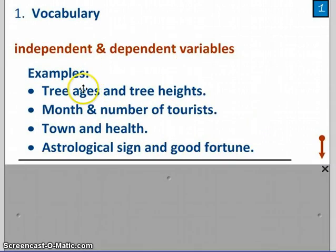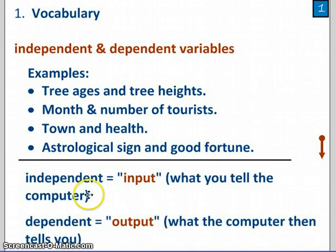Independent versus dependent variables. We talked about these examples before and how we thought there were relations. So, independent variables are the inputs. One way of thinking of it is, what's the information you would type into the computer to get the answer? So, you might type in a particular tree age hoping to find out what the predicted tree height would be. Or you might type in the month June and hope to figure out, how many tourists can I expect? The dependent variable is the output. It's what the computer tells you.